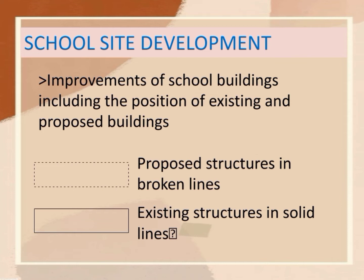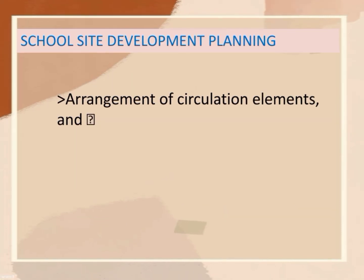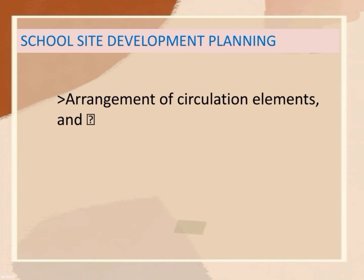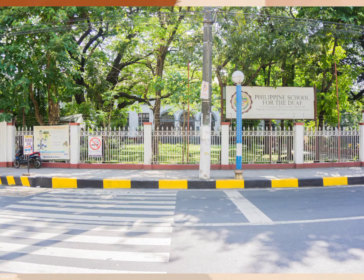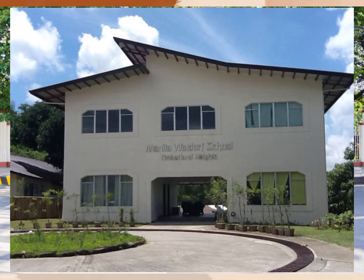Existing structures include any structure that is currently designed to support the attachment of facilities. A school site development plan should also show improvements on arrangement of circulation elements, which consists of the main road, the sidewalk, and the driveway, which are intended to facilitate movement within the school site.